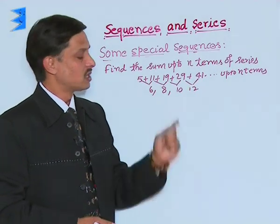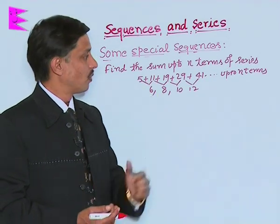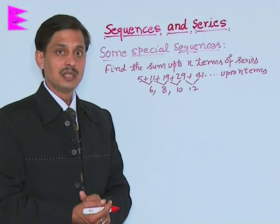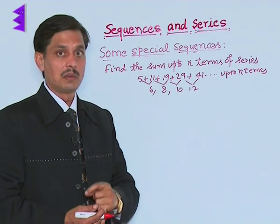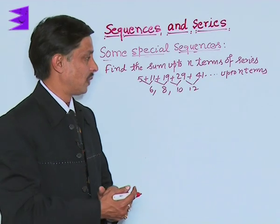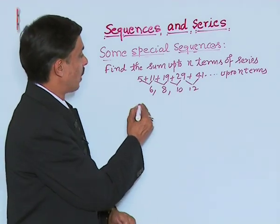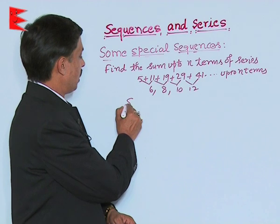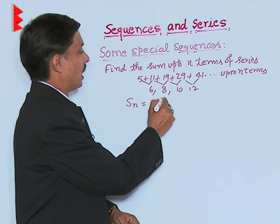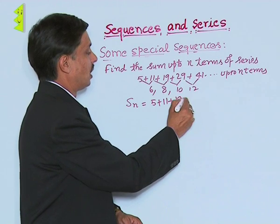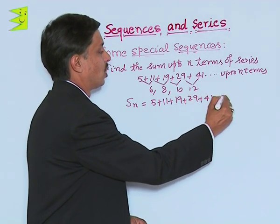That is why such kinds of problems are categorized for finding the sum of n terms by the method of difference. The procedure — the algorithm to find the sum — is: Sn = 5 + 11 + 19 + 29 + 41 + ...